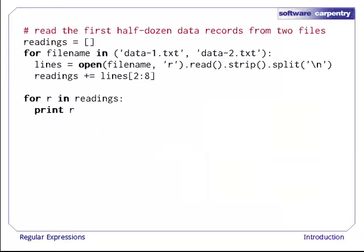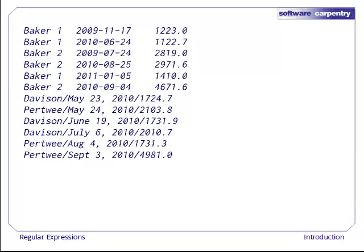Let's start by reading in data from two files and grabbing the first few lines of each. When we print out the results in the list readings, we can see that we've got six lines from the first data file and six from the second. We'll test our regular expressions against this data to see how well or how poorly we're matching different formats of records as we go along.